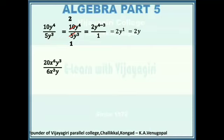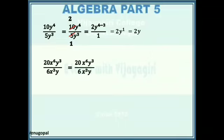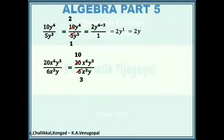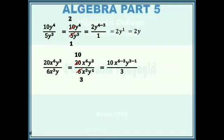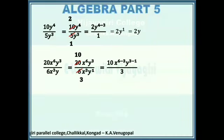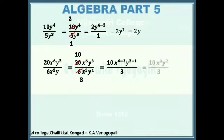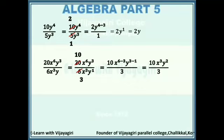20x to the power 6 y to the power 3 by 6x cubed y: first reduce the numbers 6 and 20 — there is a common factor 2, so 2 goes into 6 three times and into 20 ten times. It can be written as 10x to the power 6 minus 3 and y to the power 3 minus 1 by 3. Note that in the denominator, y with no written power means the power is 1. This simplifies as 10x to the power 3 y to the power 2 by 3.